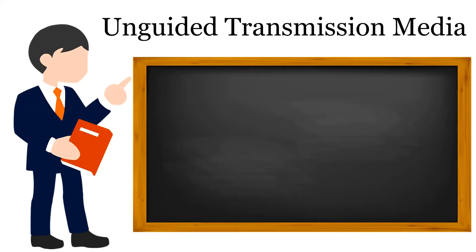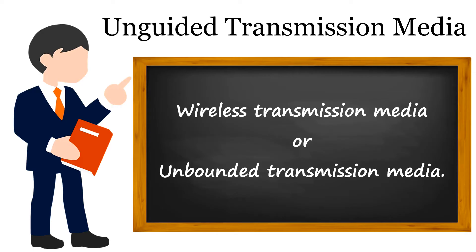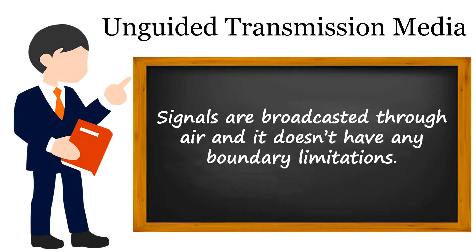The other kind of transmission media is unguided transmission media. It is not possible to cover every geographical area using guided transmission media because of geographical conditions such as mountains, rivers, oceans, etc. The unguided transmission media provides a way of communication in such areas. It is also referred to as wireless transmission media or unbounded transmission media. It doesn't require a physical medium, and signals are transmitted through air in the form of electromagnetic signals. The signals are broadcasted in the air and captured by devices capable of receiving them, with no boundary limitation, transmitted in every direction.